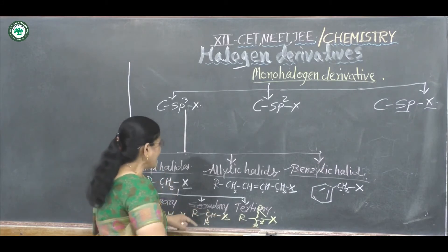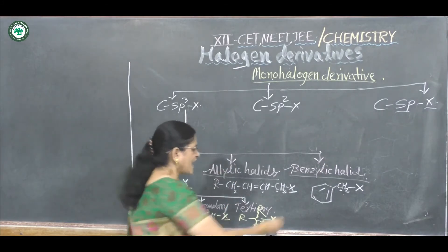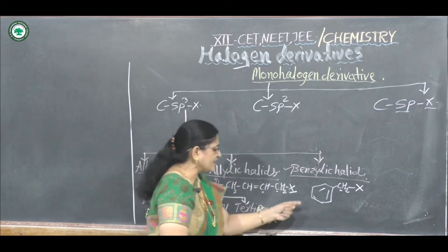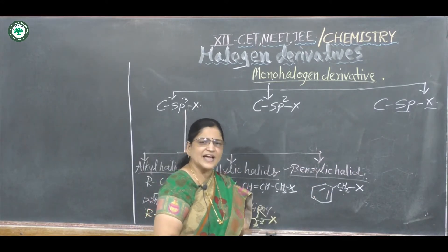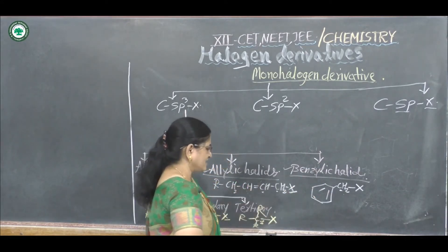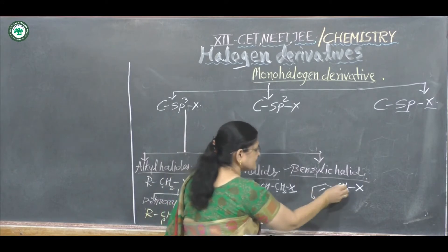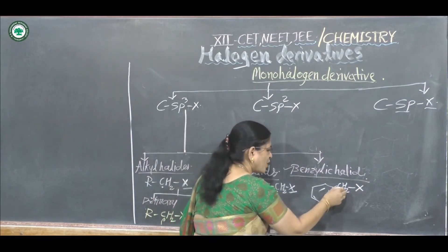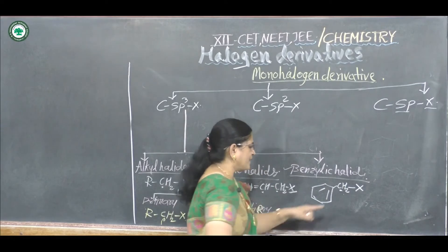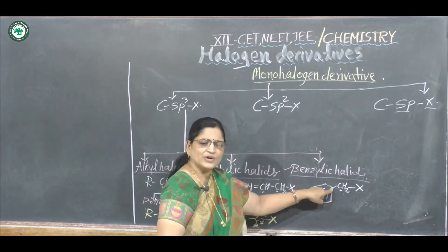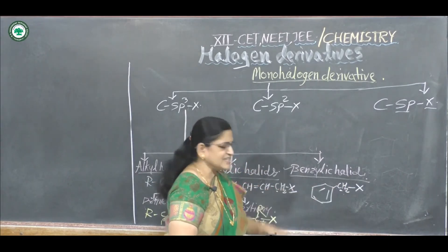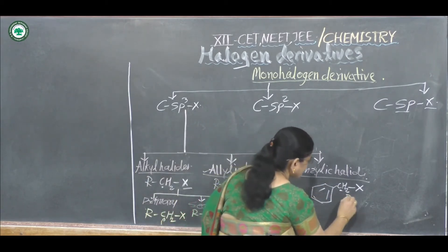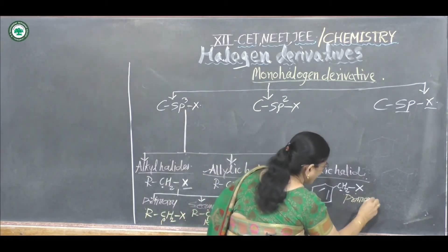In the same way, allylic halides and benzylic halides may also be primary, secondary, or tertiary. For example, in primary allylic halide, this carbon atom is bonded to only one carbon atom, hence it is a primary carbon atom.